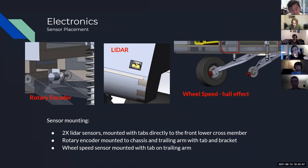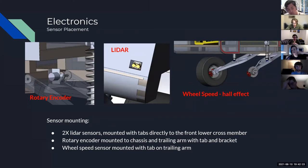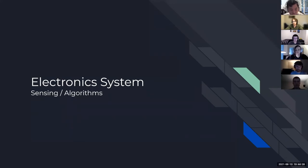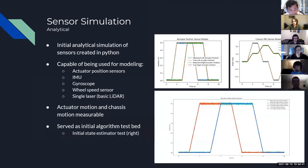For sensor placement: the wheel speed sensor is at the end of the trailing arm measuring a rotating magnet on the wheel. We have two LiDAR sensors, one front-left and one front-right of the trailer. Our rotary encoder is mounted to the chassis and the trailing arm to measure the trailing arm's angle.